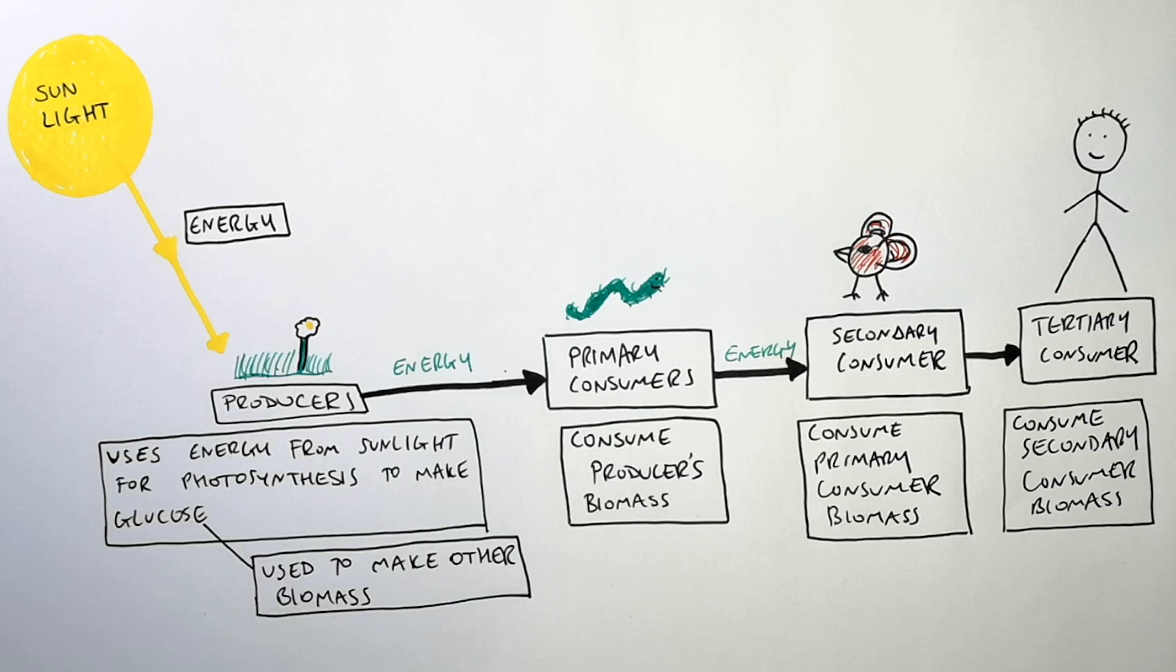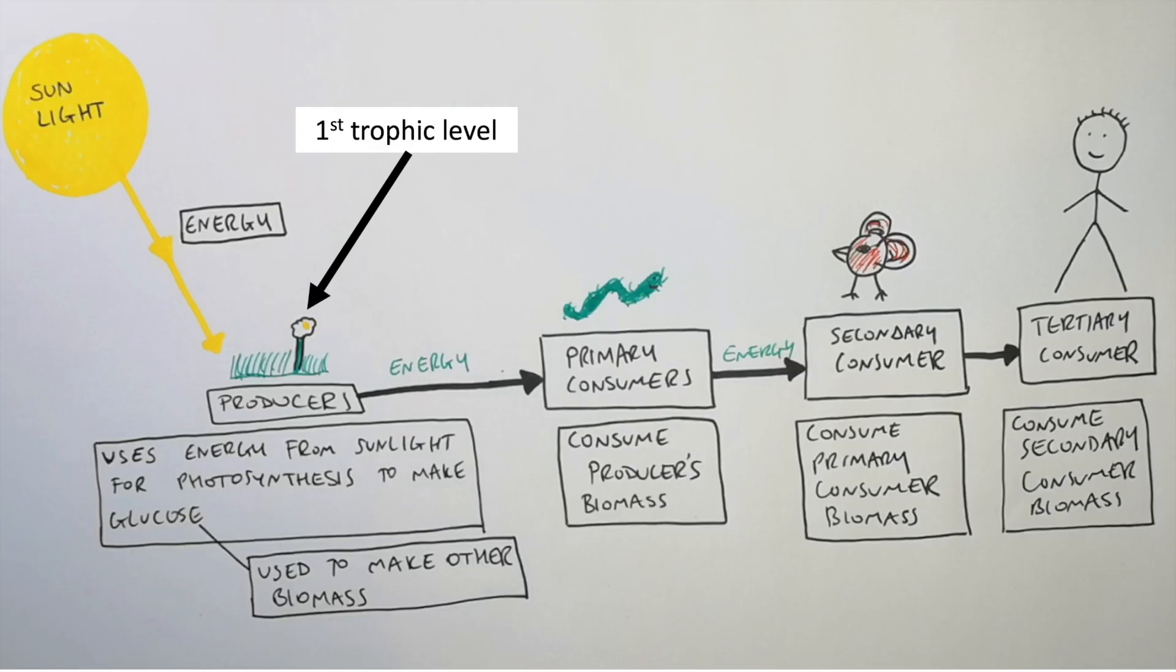So what are trophic levels? Trophic levels are how far away an organism is from the beginning of a food chain. So in this case the producer is going to be the first trophic level. So it's obvious what the primary consumer is going to be, the second trophic level. The secondary consumer, in this case the bird, that's going to be the third trophic level. And the human, that's going to be the fourth trophic level.